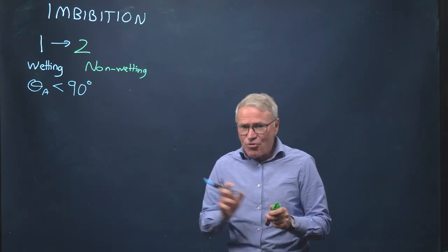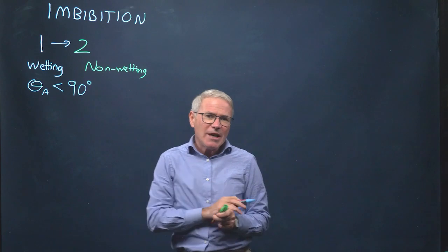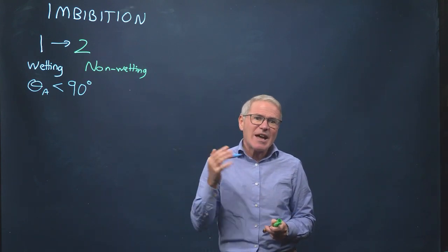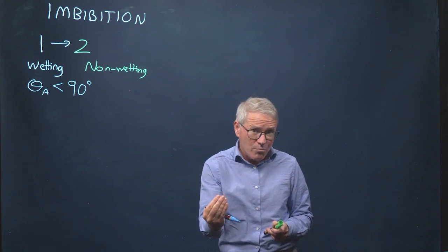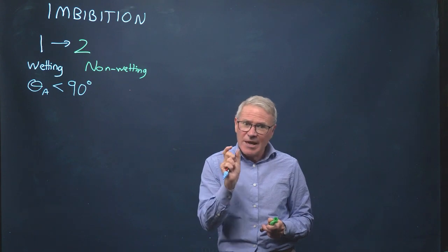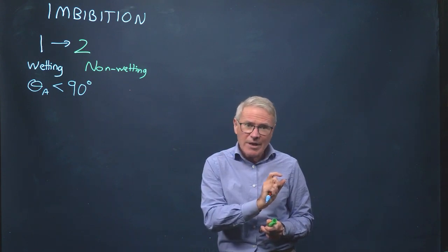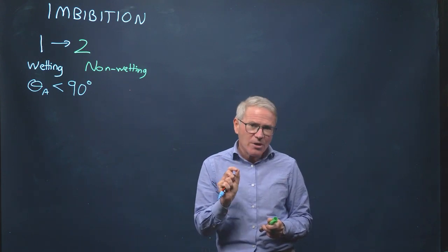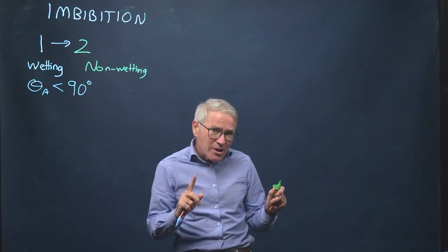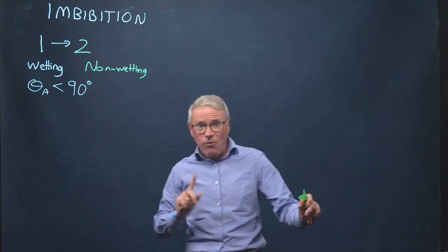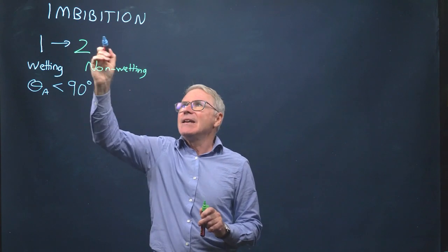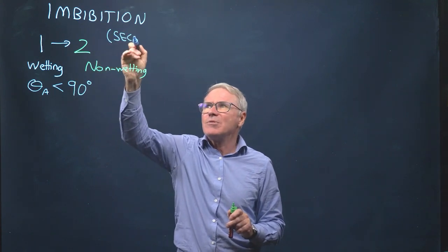In primary drainage, I mentioned 'primary'. Imbibition here is not a primary process because it occurs after primary drainage — so water is still present in the pore spaces, in the corners and roughness. Primary imbibition is in fact where the wetting phase enters a porous medium that's completely dry. That's quite a complex process because you have to form these wetting layers. What I'm going to be describing today is imbibition, but this will be a secondary process.